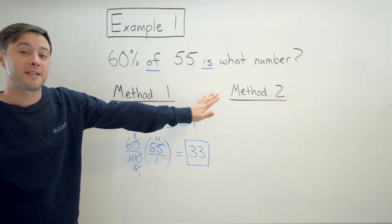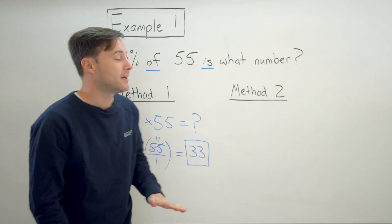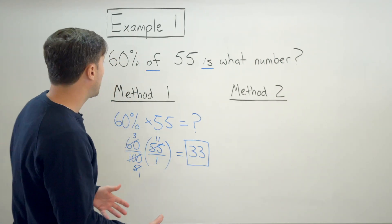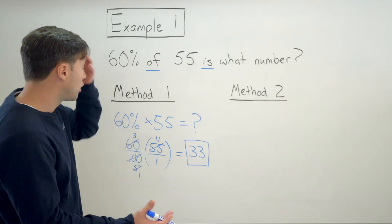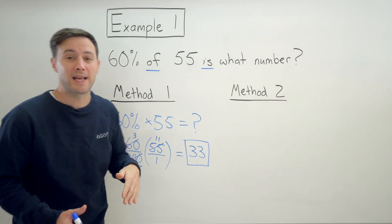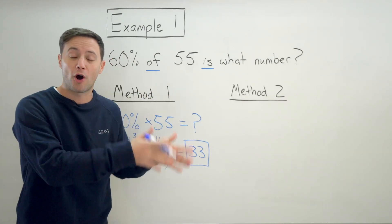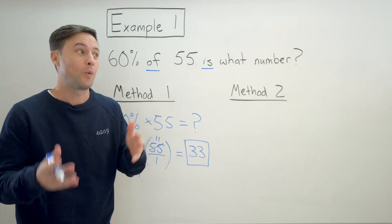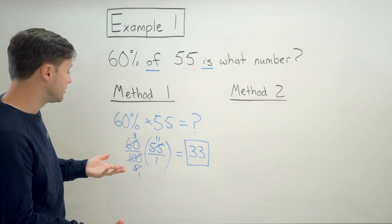Okay, let's look at the second method. The second method is going to be maybe a little bit more conceptual and using ratio tables. So we know that 60%, every percent is just a part to whole ratio where the whole is 100.